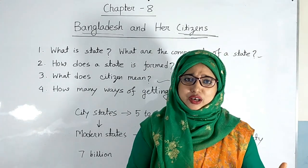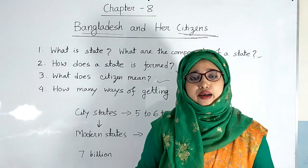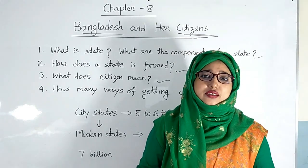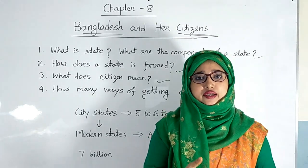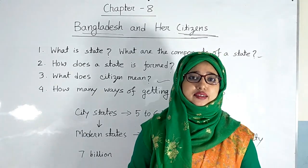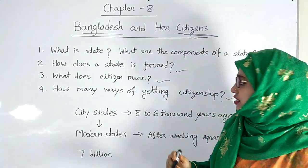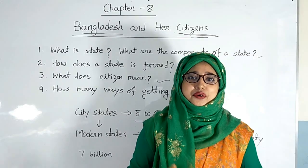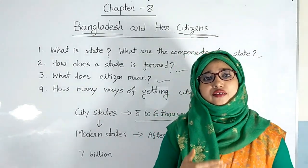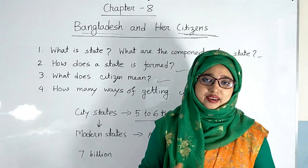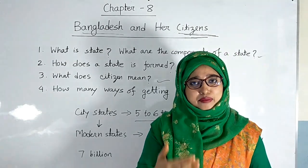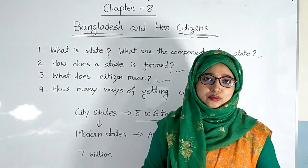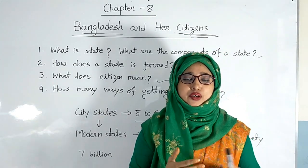Dear students, there was no existence of state in the primitive society. But with the passage of time, at first some city-states were formed in ancient society, such as Sparta, Athens, etc. These city-states were formed five to six thousand years ago. Most of the city-states were formed on the banks of rivers and seas. And after the aboriginal society, the states of the world started to form. That means modern states were formed gradually.